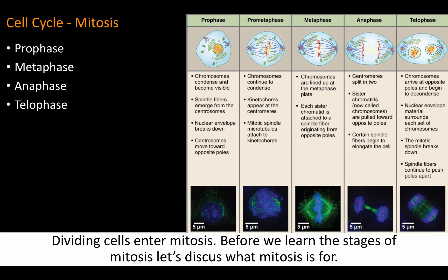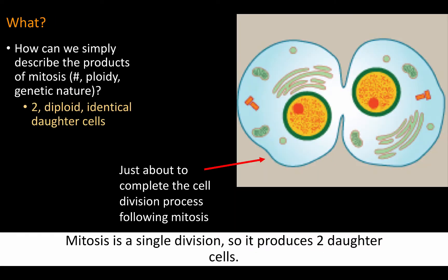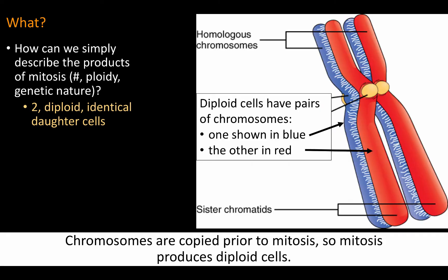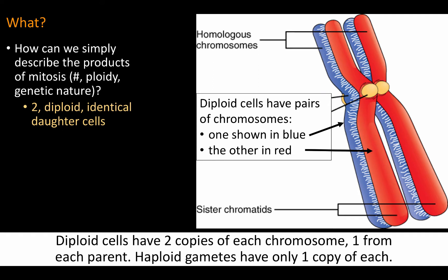Before we learn the stages of mitosis, let's discuss what mitosis is for. Mitosis is a single division, so it produces two daughter cells. Chromosomes are copied prior to mitosis, so mitosis produces diploid cells. Diploid cells have two copies of each chromosome, one from each parent. Haploid gametes have only one copy of each.